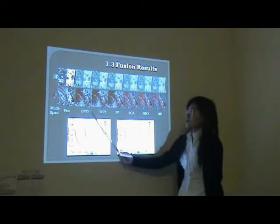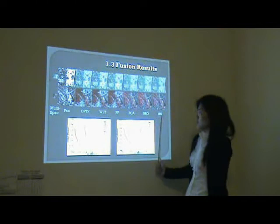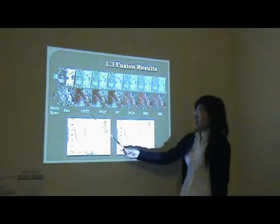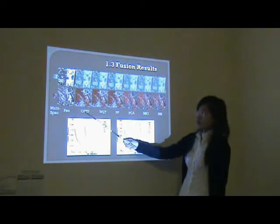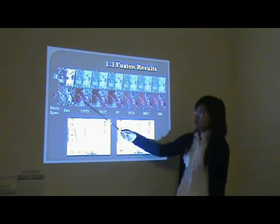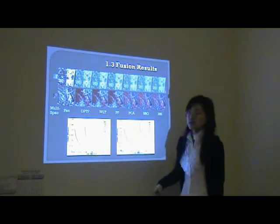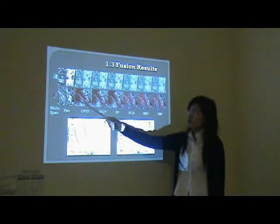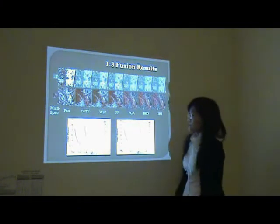Here is the fusion result with different methods. From right to left, the result becomes better. The optimal fusion is fast — it can improve the spatial details significantly and preserve the multispectral color, regardless of the two fusion images being at different spatial ranges.